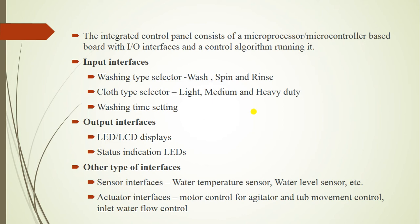The cloth type selector has three options: light, medium, and heavy duty. For example, to wash a bed sheet, which is a heavy cloth, you need to select heavy duty mode. Based on that selection, the washing machine will function accordingly. The washing time setting uses a predefined timer; if you set a particular time for washing, it will complete washing in that predefined time. Output interfaces include LED and LCD displays used as output devices.